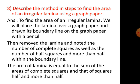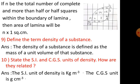Then, remove the lamina and note the number of complete squares as well as the number of half squares and more than half within the boundary line. The area of lamina is equal to the sum of the areas of complete squares and that of squares half and more than half.